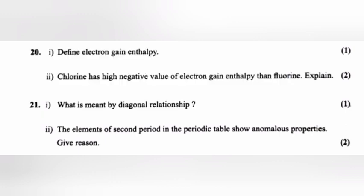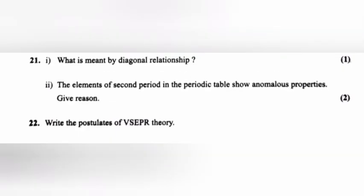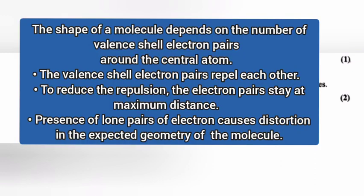Question 22: Write the postulates of VSEPR theory. Answer: The shape of a molecule depends on the number of valence shell electron pairs around the central atom. The valence shell electron pairs repel each other. To reduce the repulsion, the electron pairs stay at maximum distance. Presence of lone pairs of electrons causes distortion in the expected geometry of the molecule.